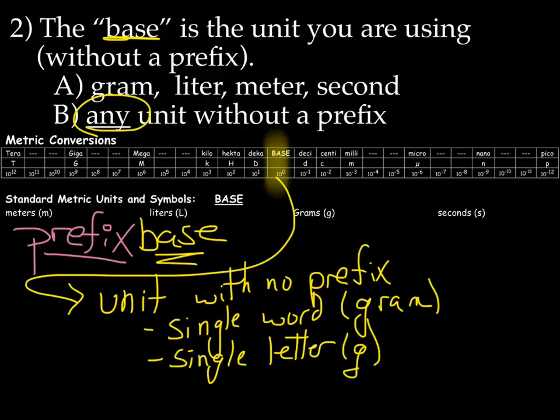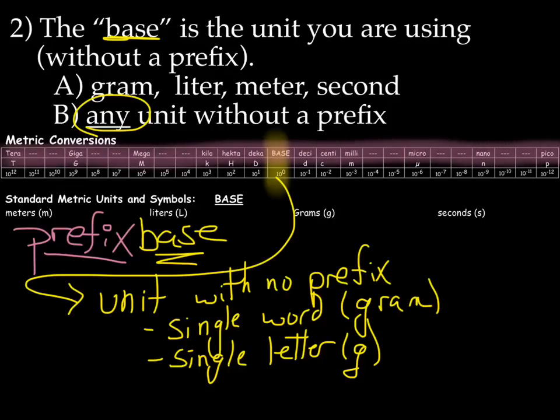Now let's talk about the prefixes. Prefixes can also be found on the metric conversion table, and it's the top two rows here. On the far left, we have the prefix tera, which has an abbreviation of capital T. The far right, we have the prefix pico, which has the abbreviation little p.